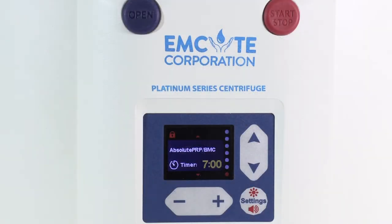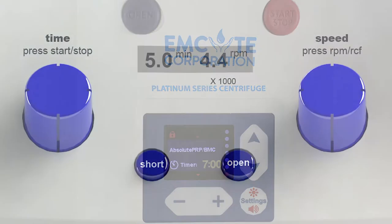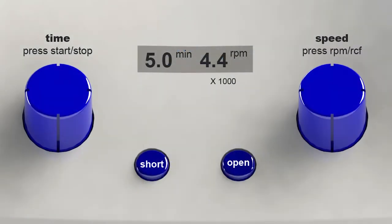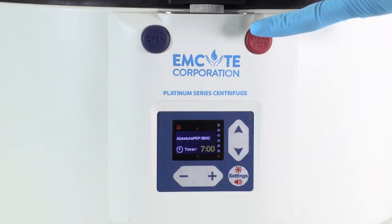Set the Platinum Series centrifuge at absolute PRP. Set the Executive Series centrifuge at 5 minutes and 4,400 RPMs. Close the centrifuge lid and press start.